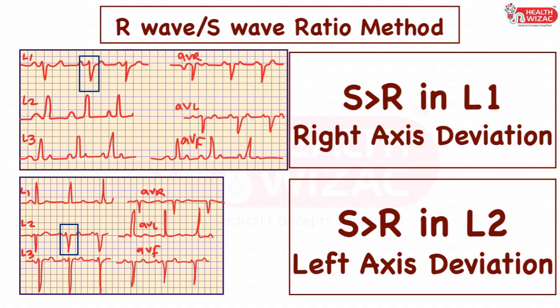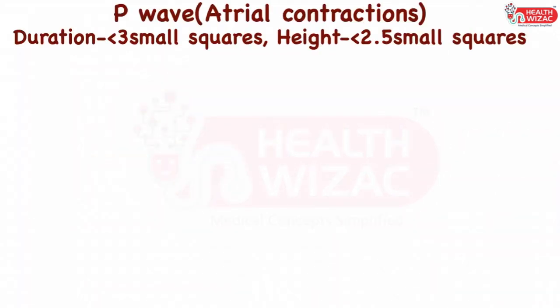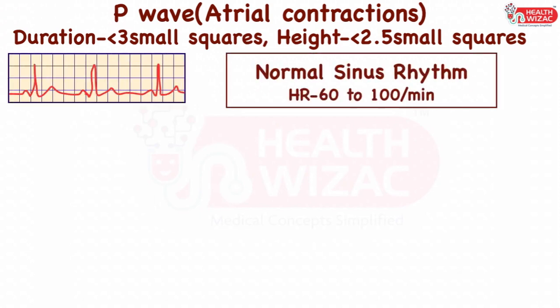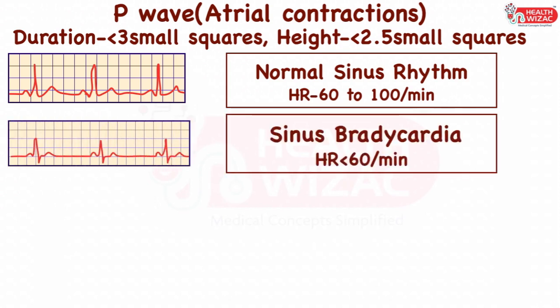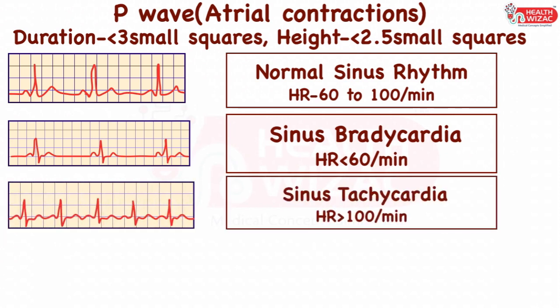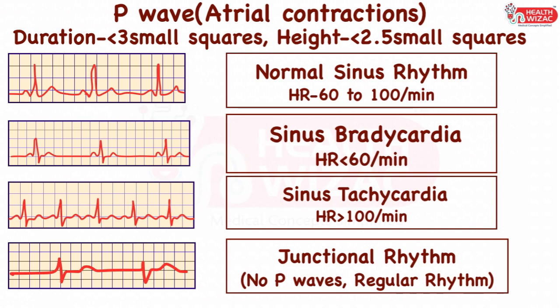P wave represents atrial contraction and has a duration of less than 120 milliseconds or less than 3 small squares, and height of less than 2.5 small squares. If P waves are present and heart rate is between 60 to 100 per minute, ECG is labeled as normal sinus rhythm. If heart rate is less than 60, it is sinus bradycardia. If heart rate is more than 100, it is sinus tachycardia. If P waves are absent and rhythm is regular, ECG is labeled as junctional rhythm.